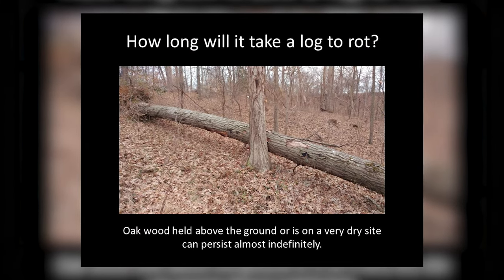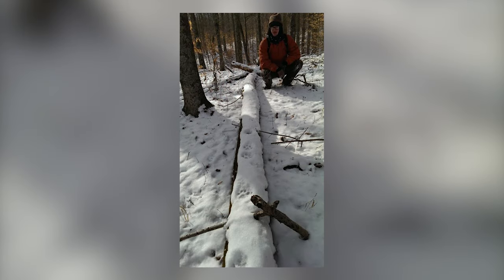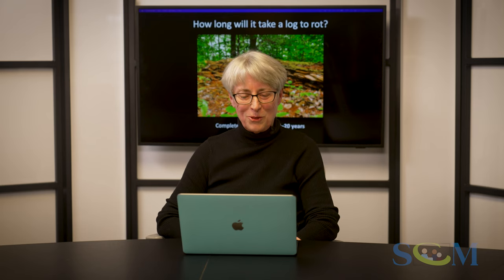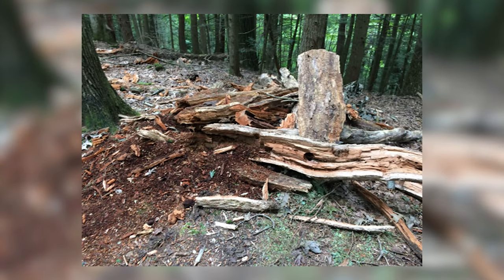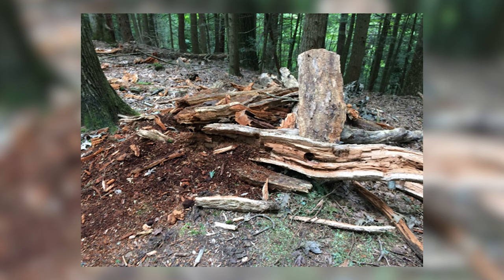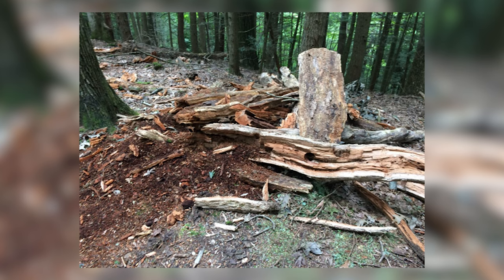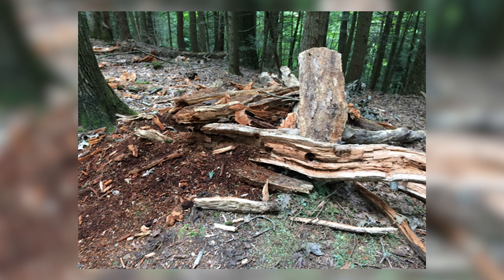So how long does it take for a log to rot? If it's hanging up in the air on a dry site, it can last for a long time. Those trees often act as little highways for wildlife — you can see the footprints of small creatures that chose to walk along the log instead of the forest floor. If it's in contact with the ground, it takes about 15 to 20 years to degrade. A stump in the Midwest can take about 25 to 50 years to rot completely away. You can see the various processes — parts of the stump still standing, while parts that have fallen on the ground have been ripped up by animals looking for insects, fungus is eating it, and it's starting to become part of the forest soil.